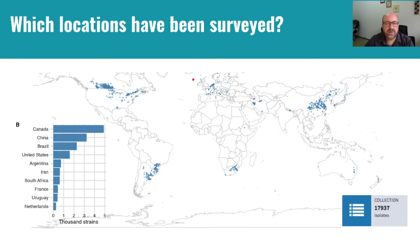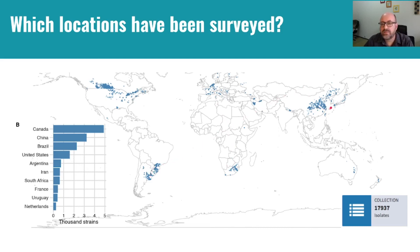Which locations have been surveyed? Here you can see the number of strains by country. The top five are Canada, China, Brazil, United States, and Argentina. Canada has large, dense surveys conducted in the last 20 years, but Europe has not made much information available — the information may be there but not published in papers. South Africa is represented, and South America covers all the important crop areas. China has a lot of papers and also a lot of strain information.